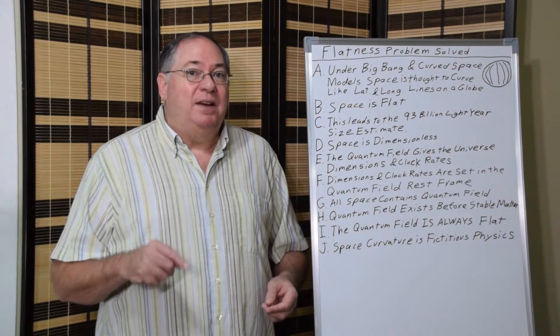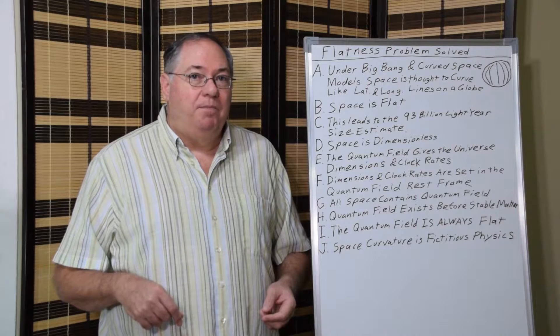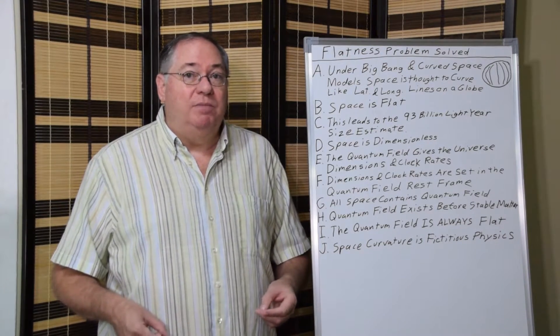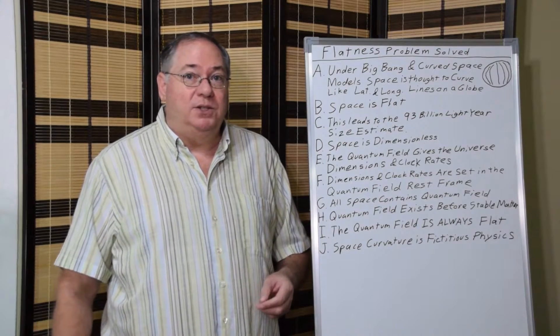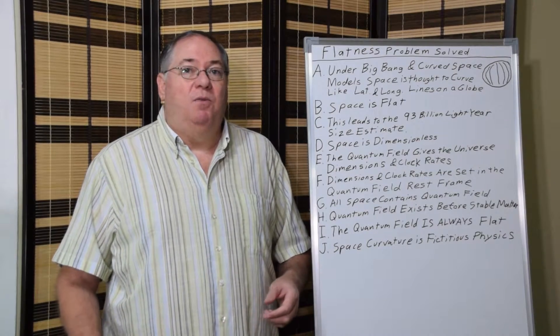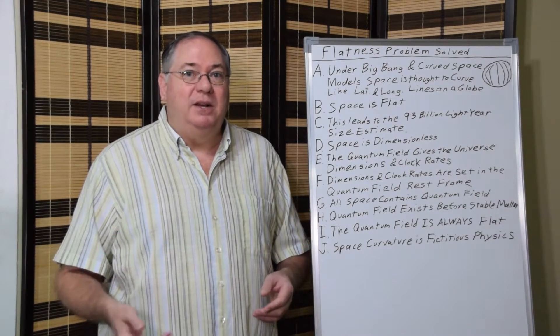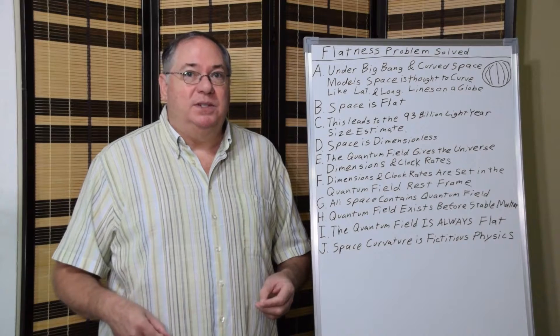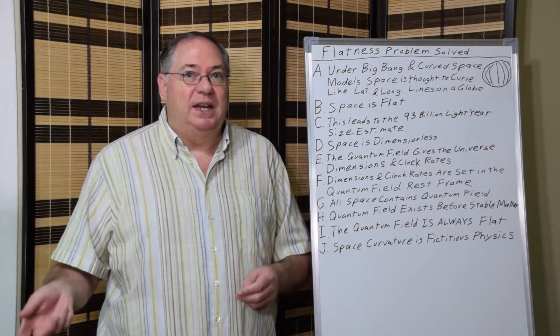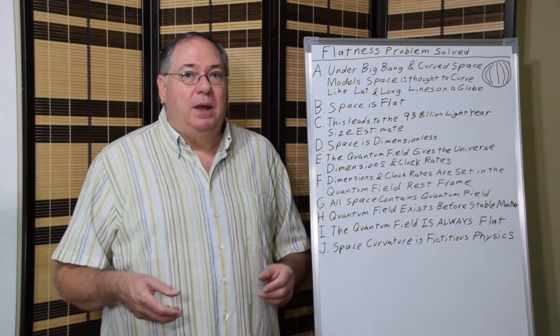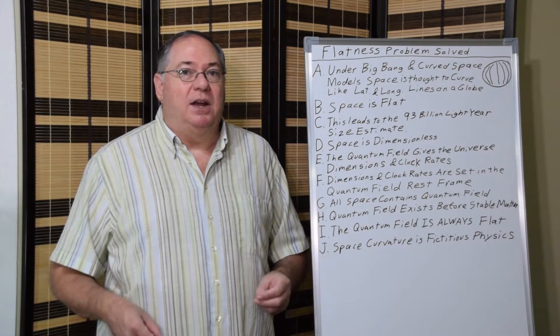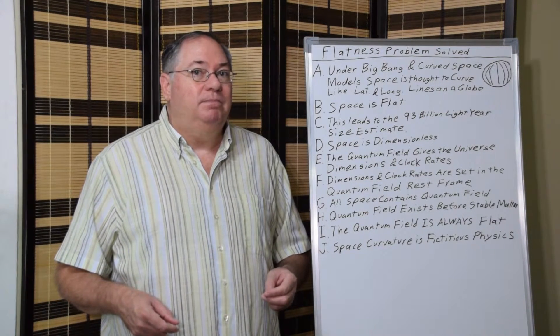But what does have dimensions is the quantum field. All real space, as far as we know, contains a quantum field which is composed of quantum fluctuations. Quantum fluctuations have wavelengths and frequencies. Wavelengths have dimensions in meters, and they have frequencies in cycles per second. So wavelengths and frequencies have dimensions in time.